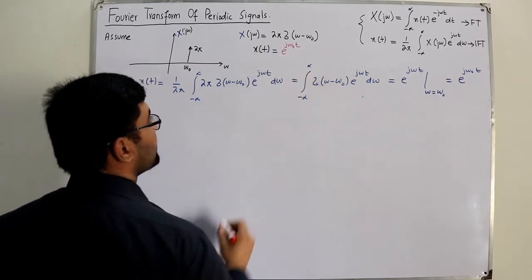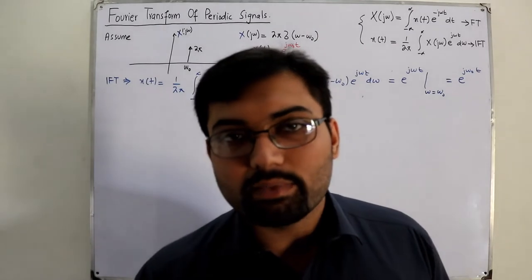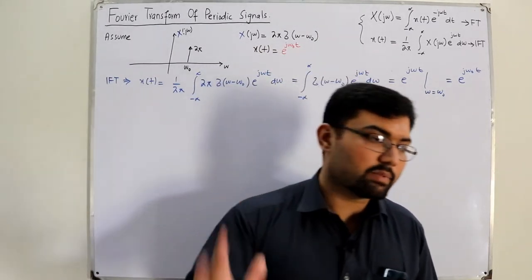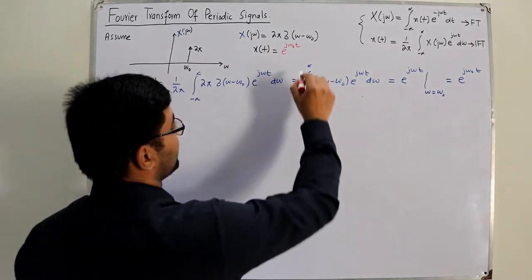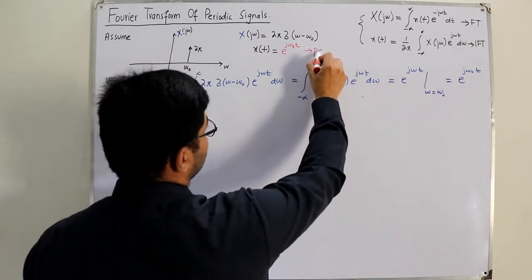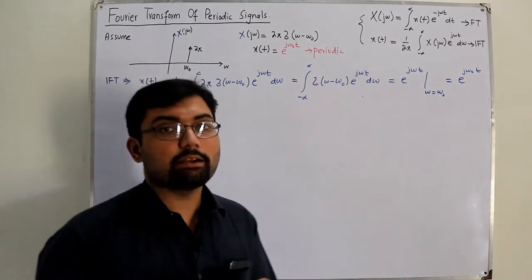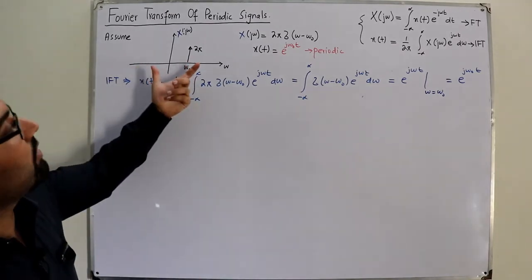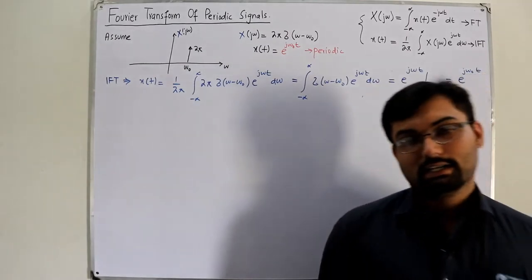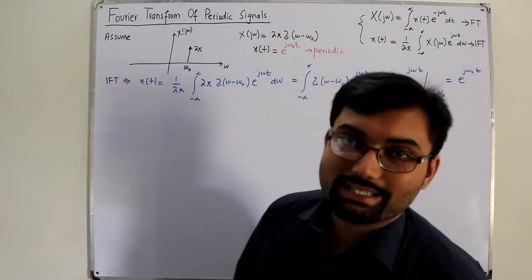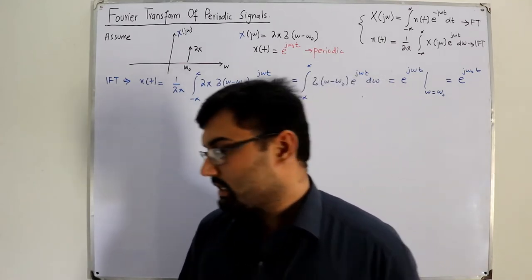Looking at e^(jω₀t) — this is a complex exponential signal representing a sinusoid, and it is a periodic signal. So we have seen that the Fourier transform exists for a periodic signal as well, which we understood through this example.